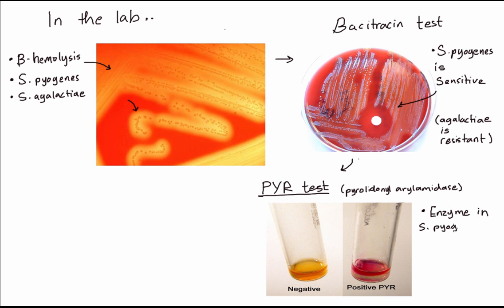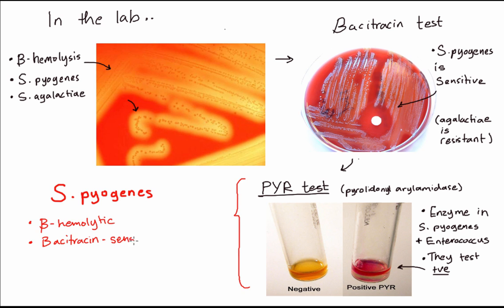It's found in strep pyogenes and in enterococci. With the enzyme, it'll break down a substrate and you'll end up with a pink colored test tube like the one on the right, and that's a positive reaction. To summarize: strep pyogenes is beta hemolytic, bacitracin sensitive, and PYR positive. You need to know these for Step 1.